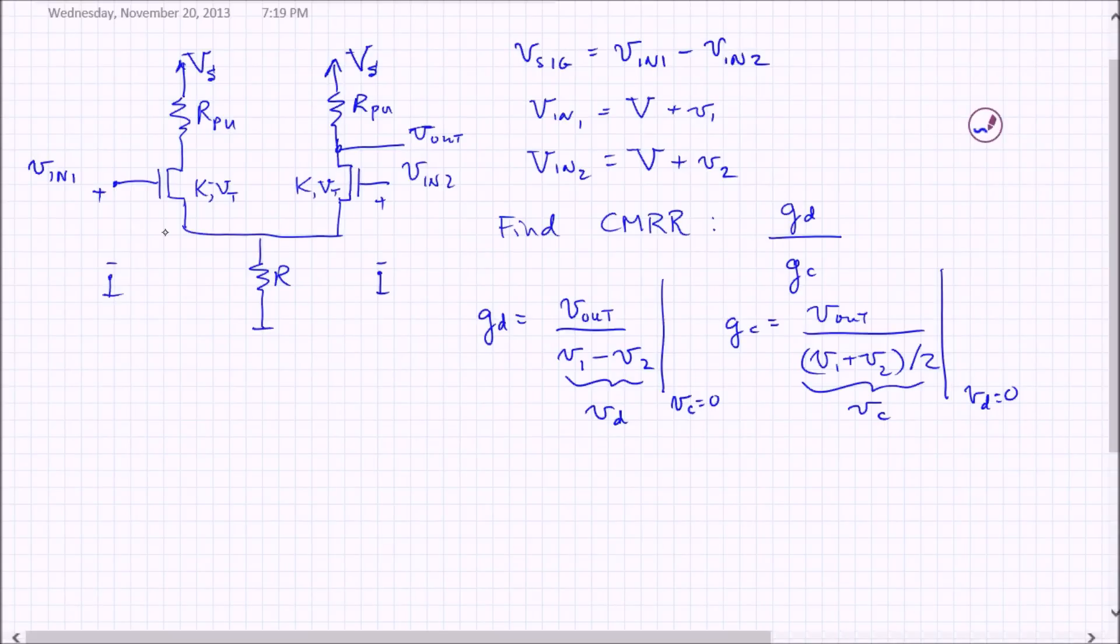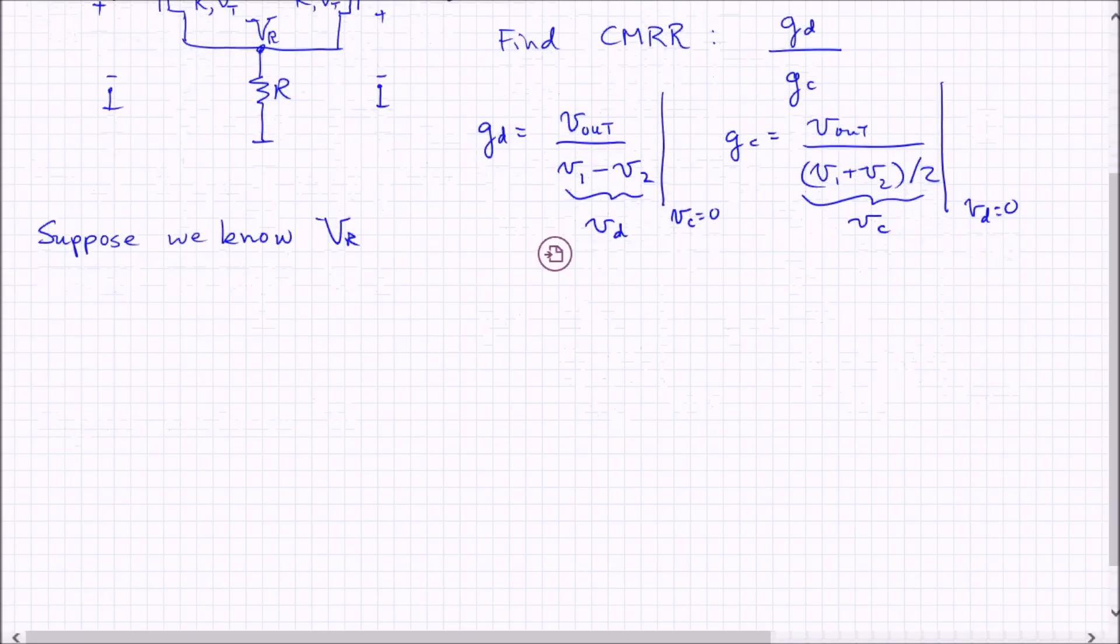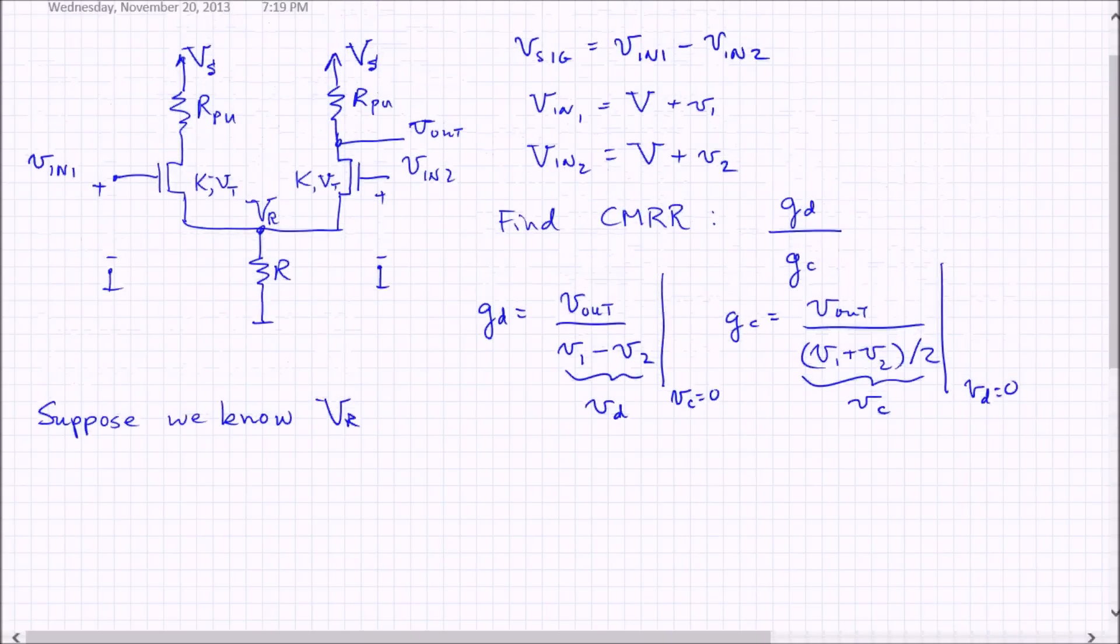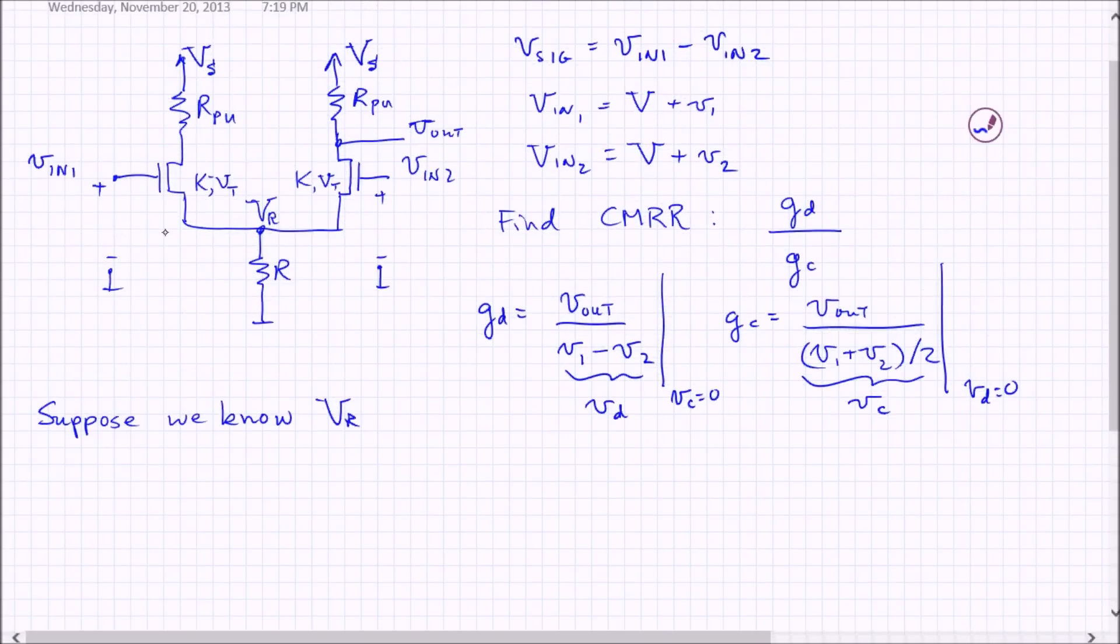So we use a trick. Basically, we'll use that we can actually treat the... Well, actually, before I get into the trick, let's think about the large signal circuit. Now, the large signal circuit is going to have some voltage here at the common source of the two. Let's call that V sub R. I'm not going to solve for it now, but let's just suppose we've already solved for it. Suppose we know V sub R.